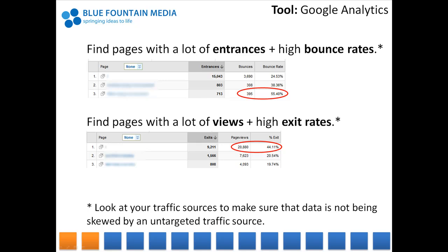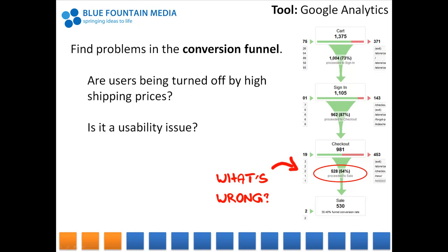By using Google Analytics, you'll be able to find out what pages have a lot of entrances — meaning pages that users go to directly without visiting the homepage — and which of those have high bounce rates. It's also useful to find pages that users visit a lot but that have high exit rates, meaning it's the last page they visit on a website. If you have a conversion funnel set up, such as a checkout process or a sign-up process of some sort, you can use Analytics to help identify roadblocks. There may be missing information or usability issues that are causing your users to drop off. These are just a few examples of how you can use Analytics to identify problematic pages on your website.